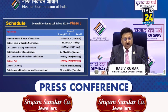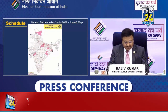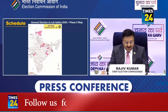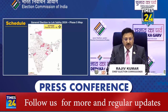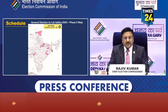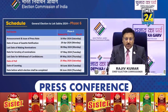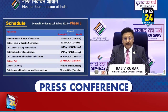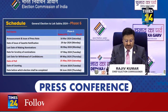Counting of course is 4th of June. It will look like this — Phase 5 mein 49 constituencies will be going to the poll. Phase 6th mein 57 constituencies will go to the poll, starting from the gazette notification on 29th of April and finishing on 25th of May 2024.